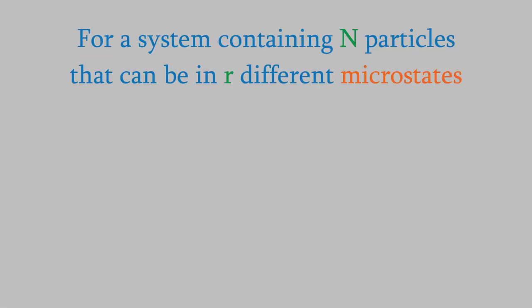Suppose you have a system that contains n distinguishable particles, and each particle can be in one of r different microstates. We could distribute the particles among the different states in many different ways according to this equation. This symbol may be unfamiliar to you. It's called n factorial,